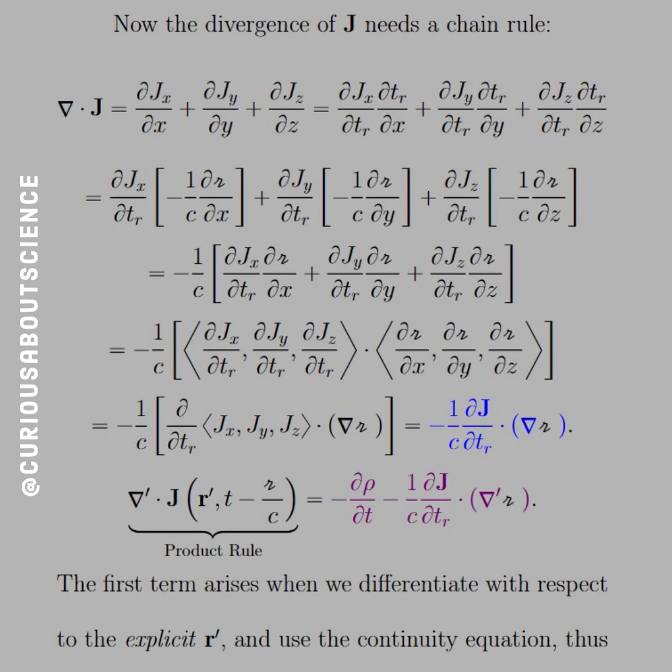Now here's where the vector algebra starts to get messy. We know that the divergence of J needs a chain rule. So we know that the typical divergence is Jx over X derivative, Jy, Y derivative, and so on. But since we know we have to evaluate with respect to the retarded time, we know that we have to, in order to get to X, we have to go from J through TR and then TR to get to X. So this is the expanded chain rule on it. We've seen it in calculus, using it again, without a doubt. So we have to tag everything with the retarded time, and that's where things start to get messy.